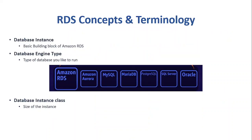Now let's look into the RDS concepts and terminologies. We'll start with the database instance — basically the building blocks of RDS. It is an isolated database environment in the cloud which contains multiple user-created databases. In other words, it's a virtual server that runs a specific database engine with different network specifications, storage, and security settings. The next concept is the database instance class, which refers to the size of the RDS database instance — simply the compute and memory capacity.